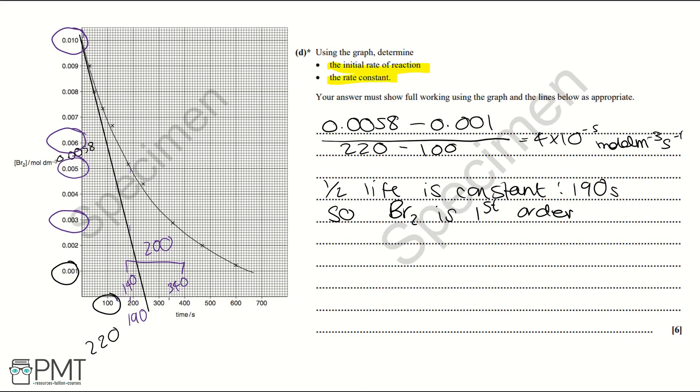Now we're going to work out the rate constant. We work out the rate constant using the equation K equals rate divided by the concentration of bromine. So we're going to use the initial rate we've worked out is 4 times 10 to the negative 5. And we're going to divide it by the concentration of bromine at T equals 0. The concentration of bromine at T equals 0 was 0.01. So that makes our rate constant 4 times 10 to the negative 3.